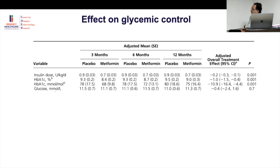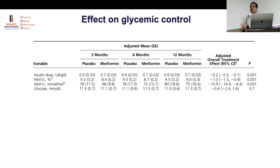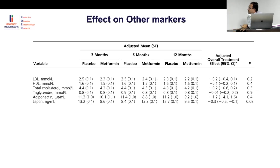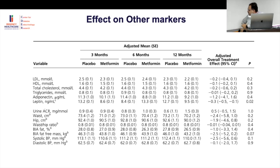The mean HbA1c even in Western Australia was around 9–9.5%, showing how difficult it is to achieve tight control in type 1 diabetes. For lipids — LDL, HDL, total cholesterol, triglycerides — there was no difference. Metformin had some effect on leptin but this could be a chance finding. The main take-home is the improvement in HbA1c and insulin dose reduction.